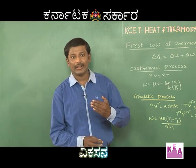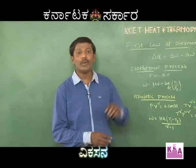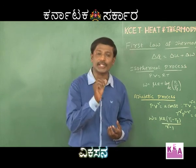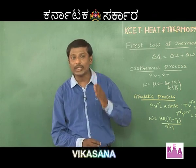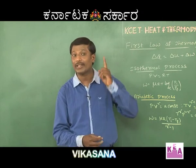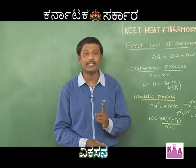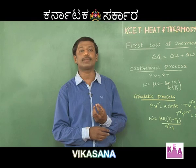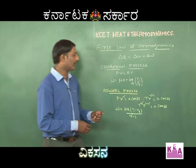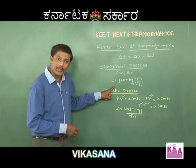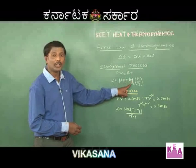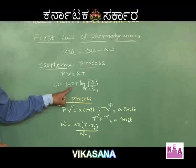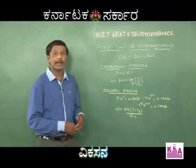Applying the first law to the isothermal process: since temperature is kept constant, the internal energy change is zero. So all the energy supplied is used only for external work done. The work done in the isothermal process is given by W equals mu R T times the natural log of initial pressure divided by final pressure, where R is the universal gas constant, T is temperature, and mu is the number of moles.